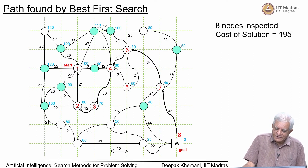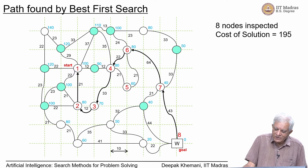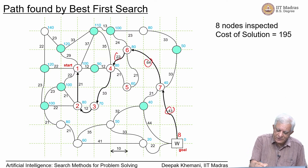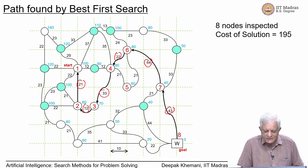Best first search inspected 8 nodes, and the order in which they were inspected is written on the graph, starting with the start node as 1, and the goal was the 8th node picked. The cost of the solution found, shown in thicker arrows, is 195 — that is 43 plus 64 plus 22 plus 33 plus 12 plus 21 — and that is how best first search performs.